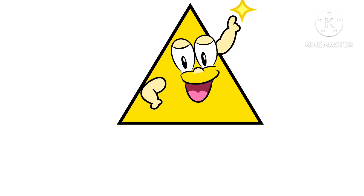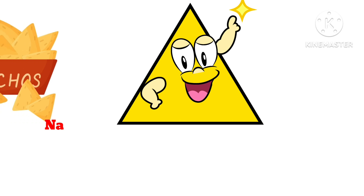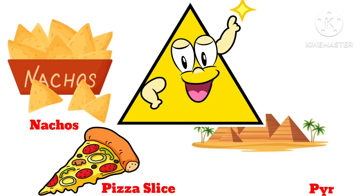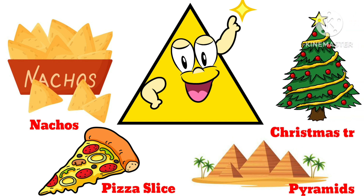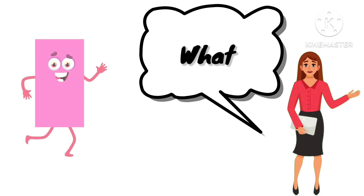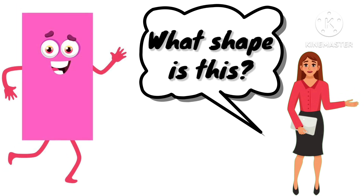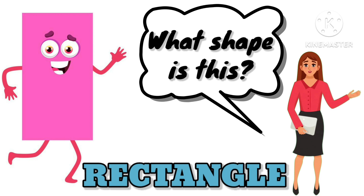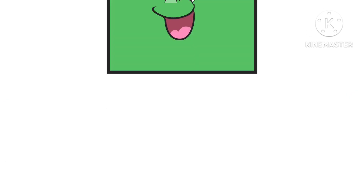What shape is this? This is a triangle. So kids, let's learn about the objects that are triangle in shape. Examples: nachos, pizza slice, pyramids, and Christmas trees are all triangle in shape.